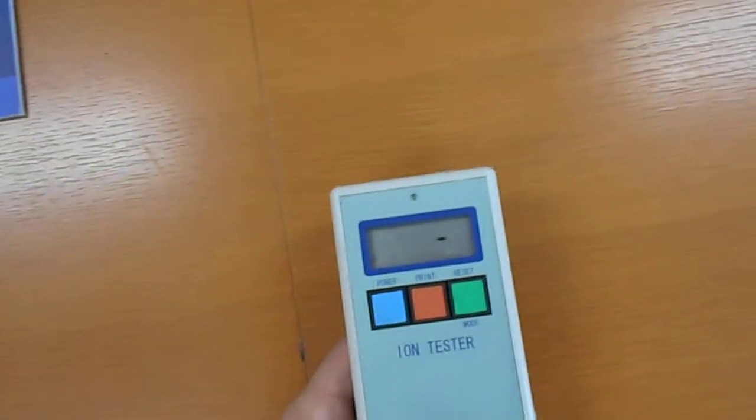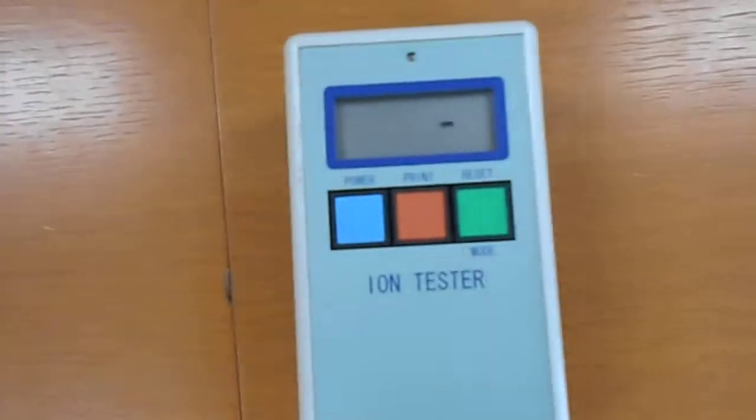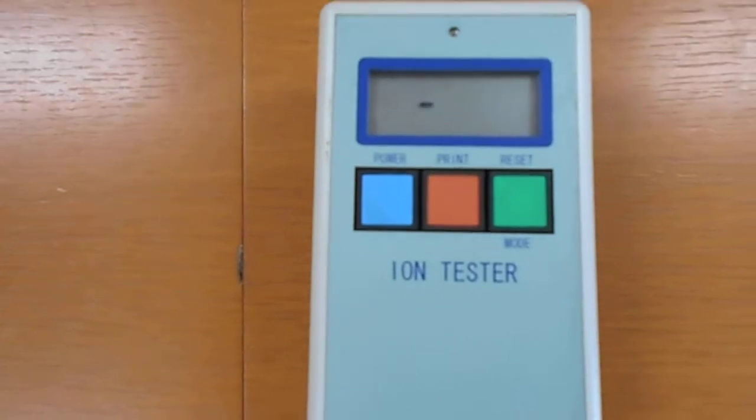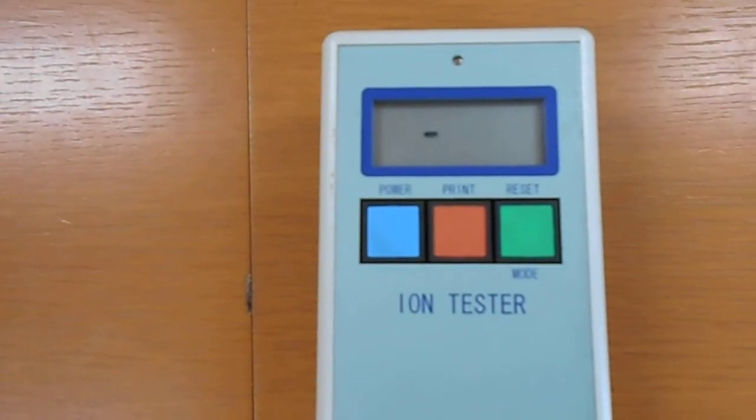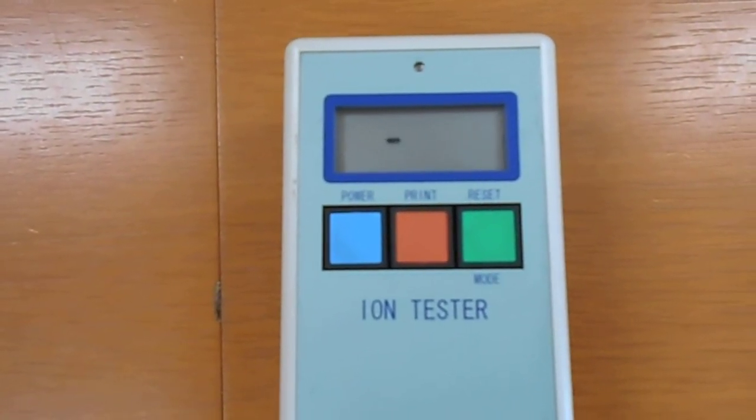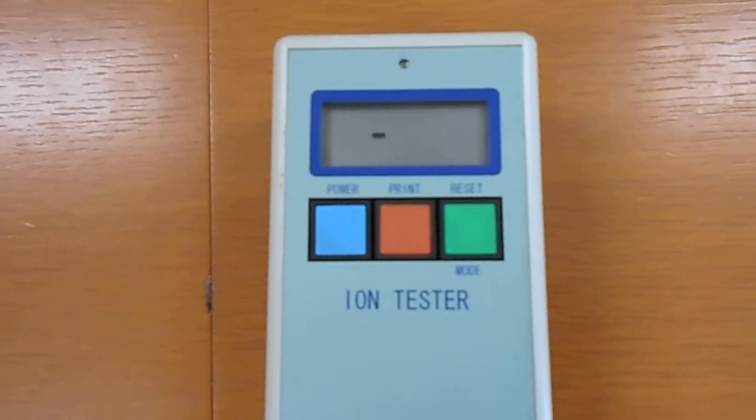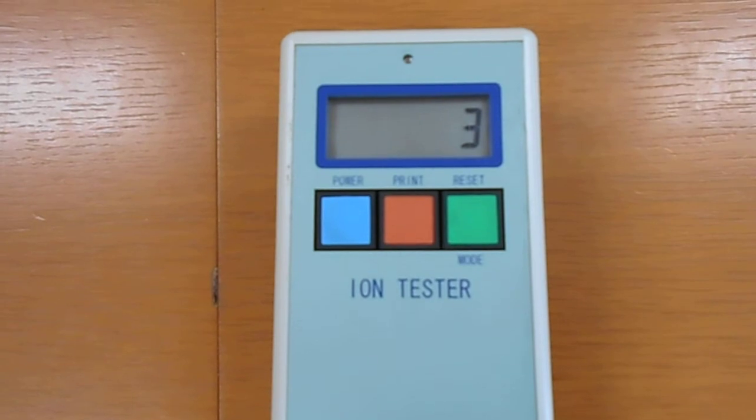First we'll check just an ordinary desk table to see how many ions have been emitted by the table. Three.